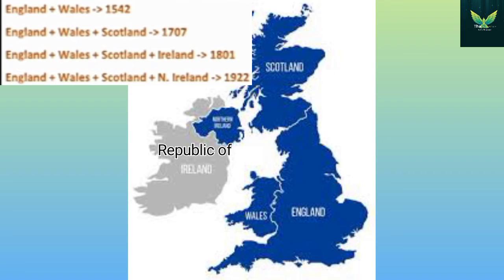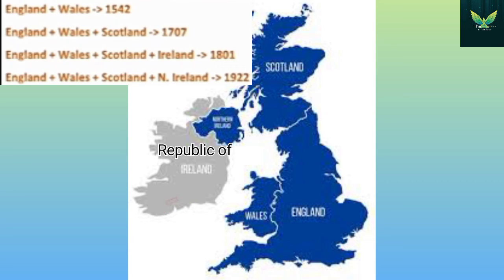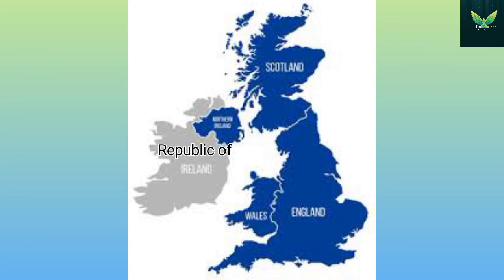But in 1922, the major part of Ireland got separated, and that major portion became the Republic of Ireland. Therefore, at present, the United Kingdom has four countries: England, Scotland, Wales, and Northern Ireland.